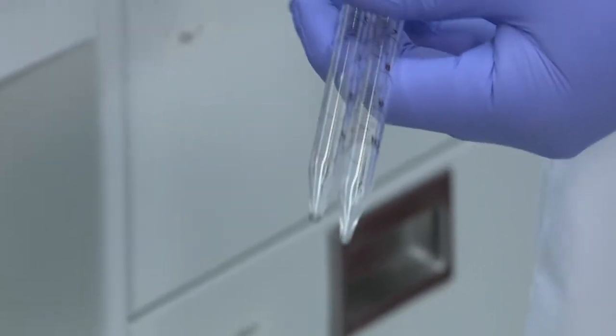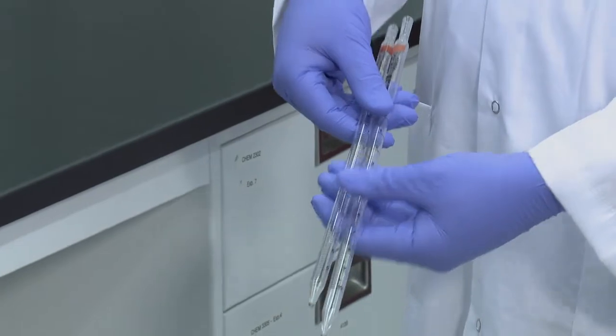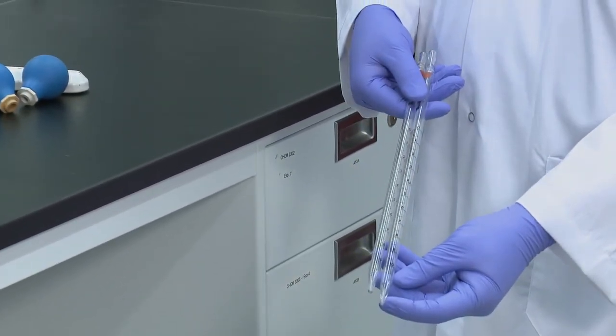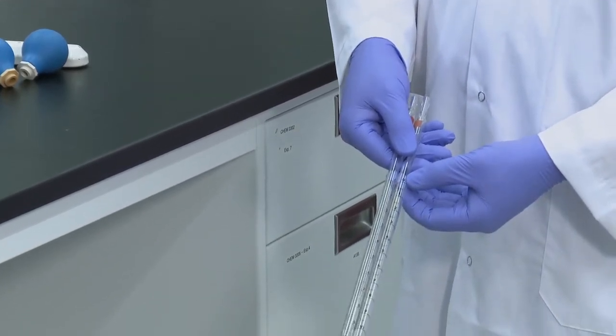This pipette is intended to be emptied from whatever line you're at to the very bottom. On the left we have a Mohr pipette where the bottom part is uncalibrated. So to deliver 10 mL in this pipette you would go from the zero line and stop at the 10.